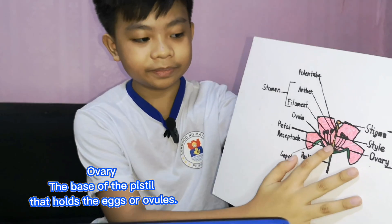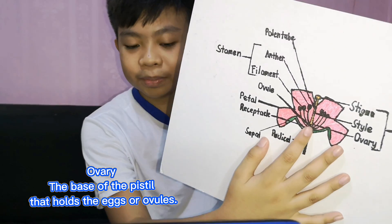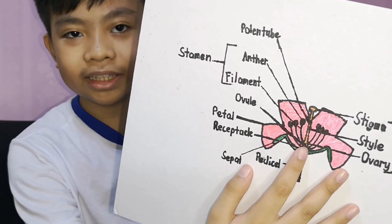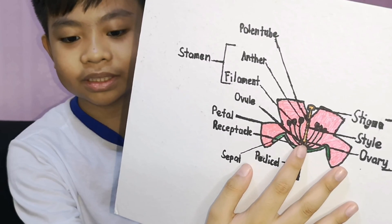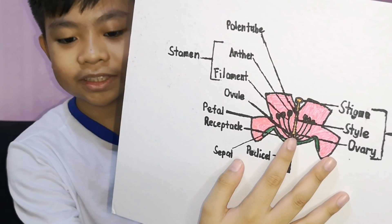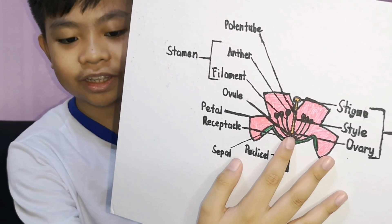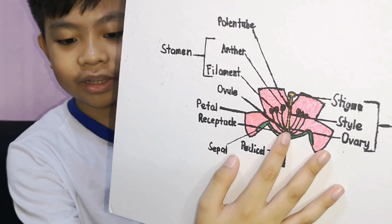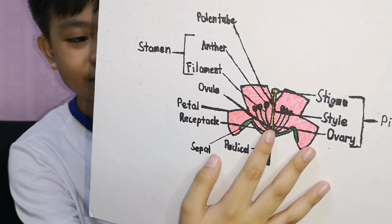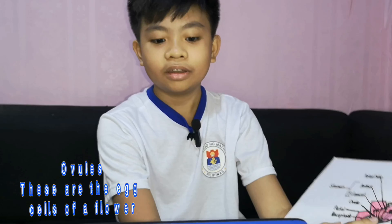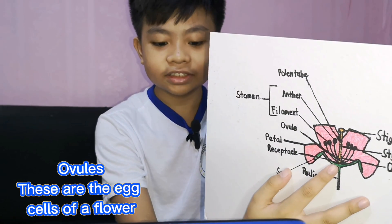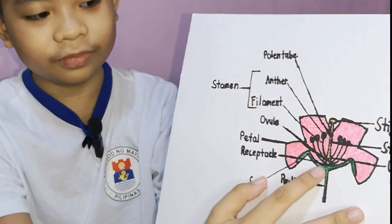Ovary. The base of the pistil that holds the eggs or ovules. The ovary later becomes the seed when the female and male reproductive cells fuse together, forming the embryo, a process called fertilization. Ovules are the egg cells of a flower contained in the ovary.